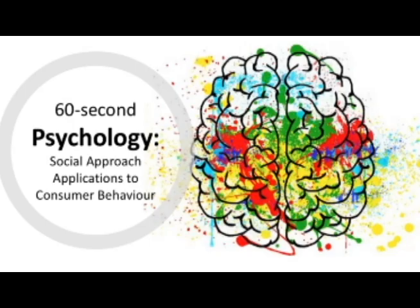So overall, the social approach in consumer behaviour is all about conformity — whether it's buying a certain brand to fit in, or buying the same as others as they seem more informed about a product. And the idea that the more people that do this, the more will follow.